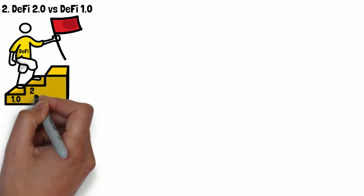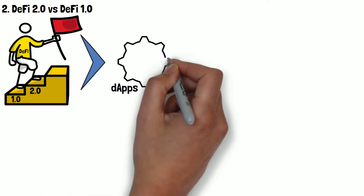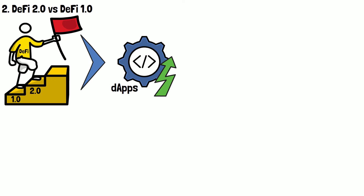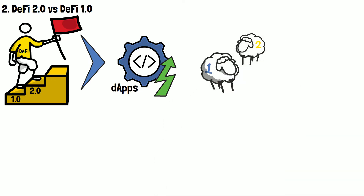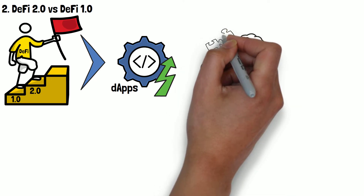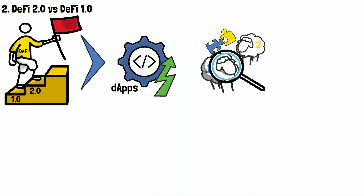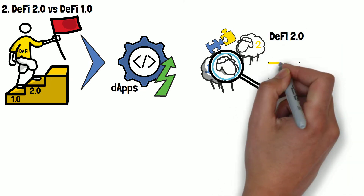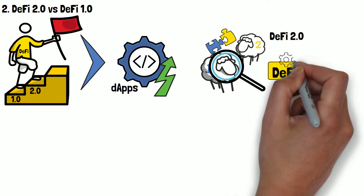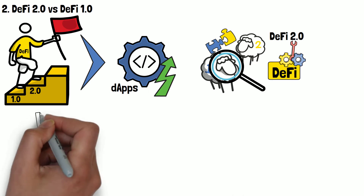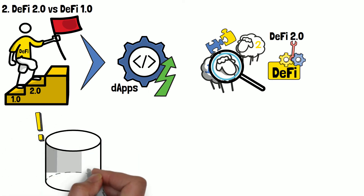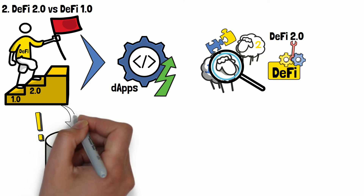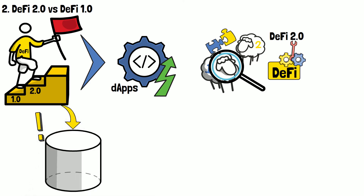Put very simply, DeFi 2.0 is the second generation of dApps concerned with decentralized finance. While the differences between DeFi 1.0 and DeFi 2.0 aren't going to be evident for an outsider looking in, if you know what to look out for, you'll notice there's a rather obvious trend. Specifically, DeFi 2.0 projects aim to improve on the weakest and most vulnerable parts of traditional DeFi. One thing that is super important in all DeFi ventures is the liquidity of the pool — this is actually the main area where DeFi 2.0 is different from traditional decentralized finance.